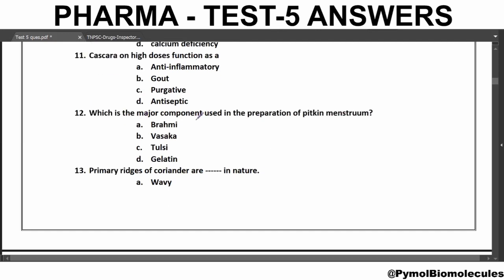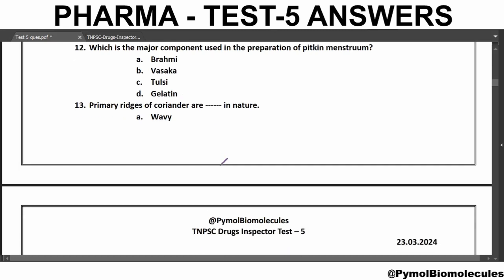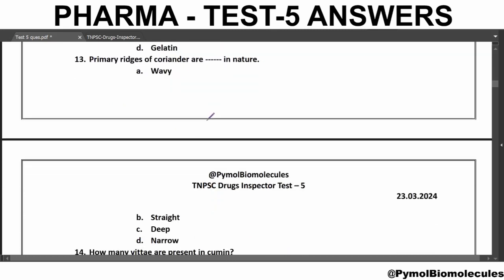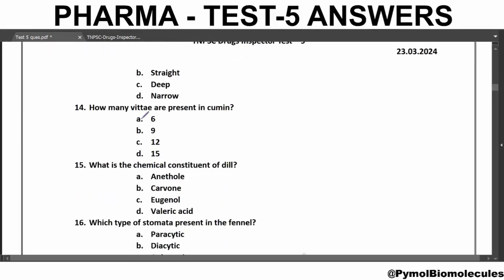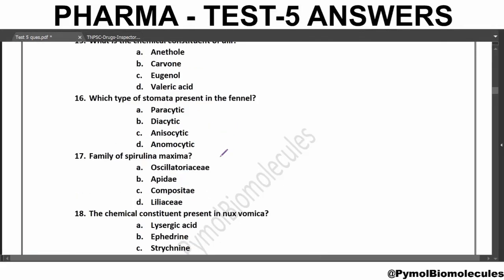Which is the major component used in the preparation of Pitkin menstruum? The answer is gelatin. The primary ridges of Coriandrol are wavy in nature. How many vittae are present in Cumin? The answer is six. What is the chemical constituent of Dill? The main chemical constituent of Dill is Carvone. Which type of stomata is present in Fennel? Anemocytic stomata is present in Fennel.